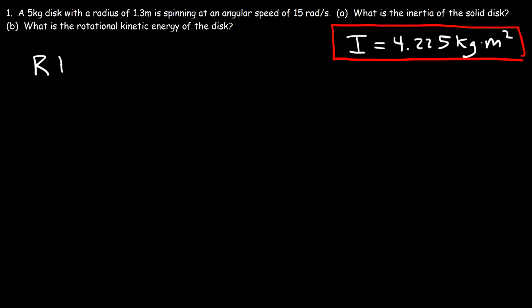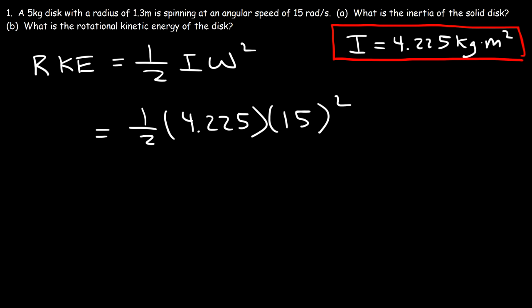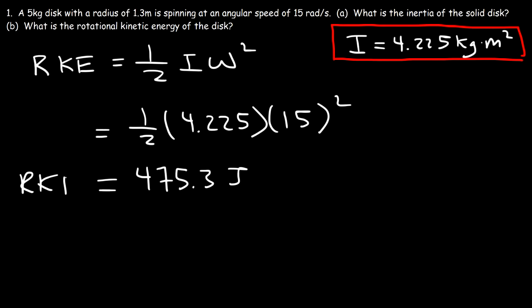The rotational kinetic energy is one half times inertia times omega squared. The inertia is 4.225 in this problem, and omega, the angular speed, is 15 radians per second. So this is going to be 475.3 joules — that's the rotational kinetic energy of the disc.